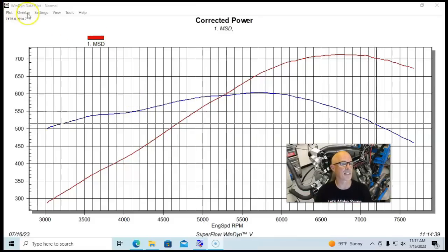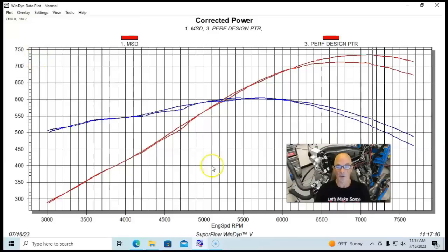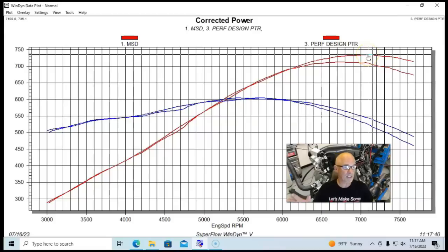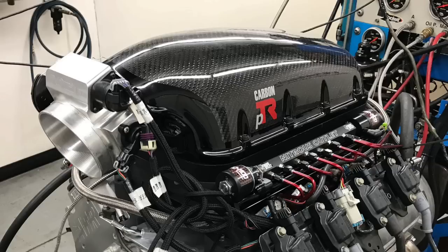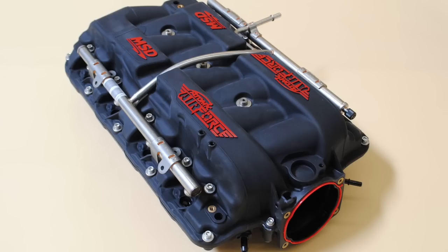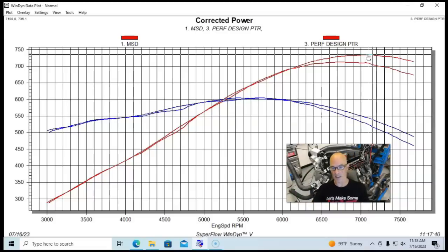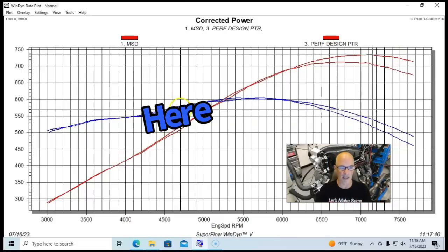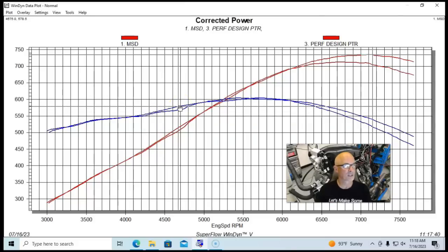This was the carbon PTR intake manifold from the guys at Performance Designs. Let's see how it compares to the MSD Atomic intake manifold. You can see it actually did very well. It made more peak power than the MSD, 735-736 horsepower. It did very well in terms of peak power. The thing that I like about this PTR design compared to the MSD is it did make more peak power, so it was better from 6200 on out, but it didn't really trade much in the way of torque the way that the High Ram did down low. There was this little bump here at 69 versus 78, so nine foot-pounds at 4600-4700 RPM, but otherwise they were very very similar.